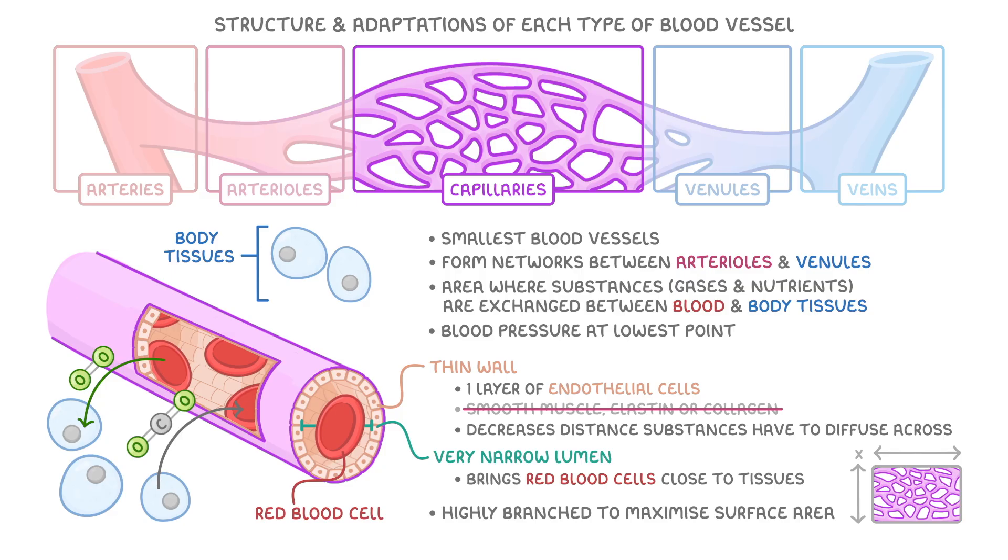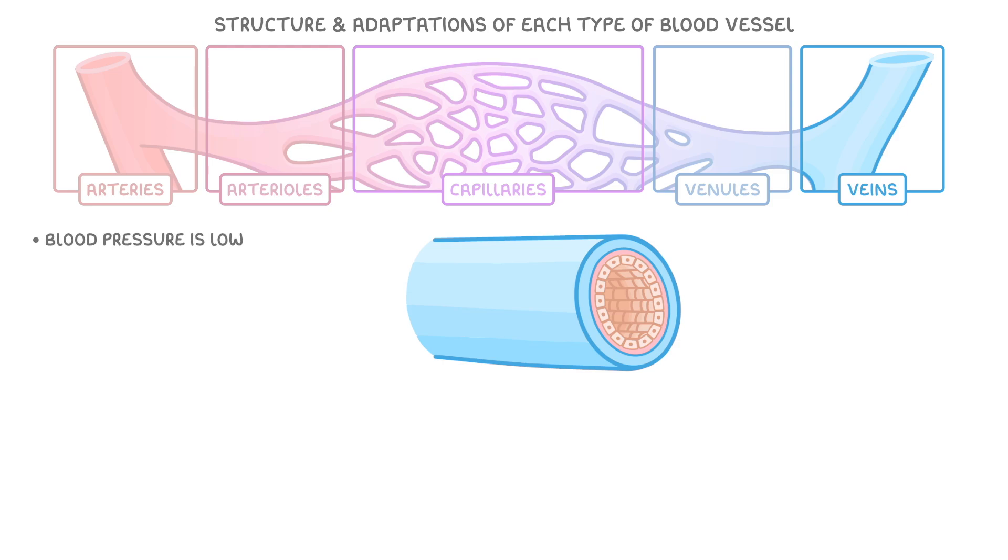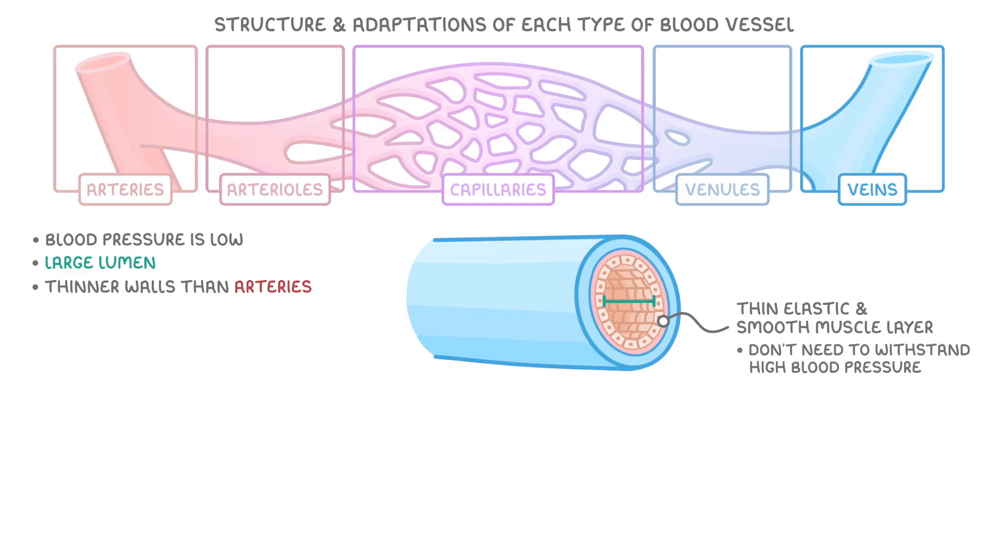Now even though the blood would move from the capillaries into venules, let's quickly jump ahead and cover veins first because this will help us understand the venules better. By the time the blood is traveling through the veins, it's been a while since it's been pumped out of the heart and so the blood pressure is quite low. Veins therefore have a fairly large lumen and have thinner inner walls than arteries do, with a very thin elastic and smooth muscle layer because they don't need to withstand high blood pressures. They do still contain collagen though, which helps to maintain their shape and prevents them from collapsing in on themselves.